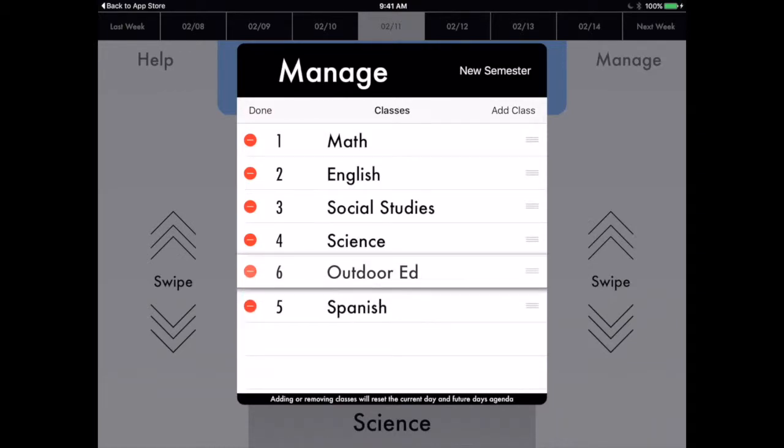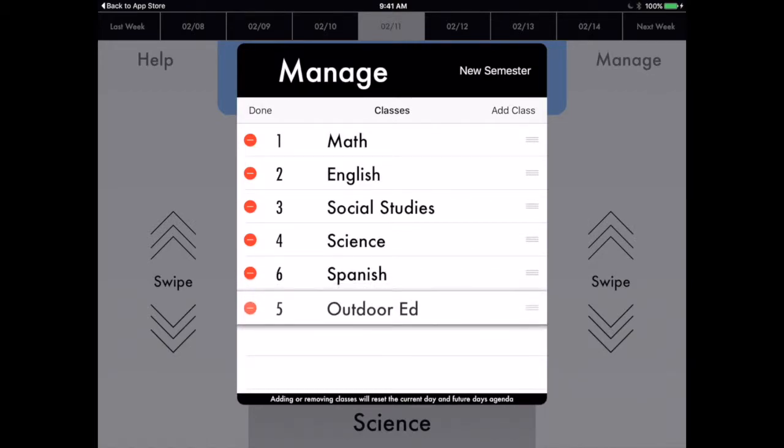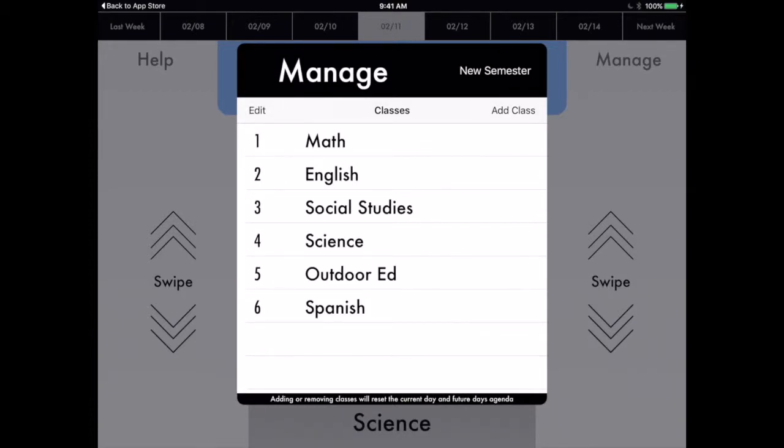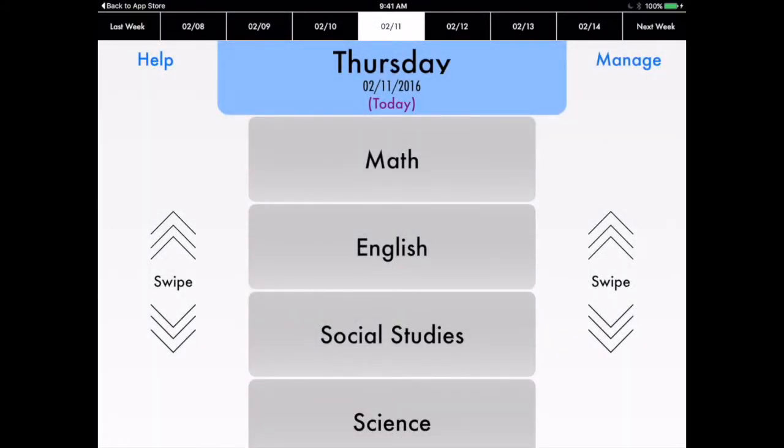Let's say that I'm in Outdoor Ed during 5th period instead of 6th. You can click on the menu, which is like the drag and drop on the right-hand side, and drag it up there and drop it. Click on Done. We're all set, we're good to go. Click outside of Manage, anywhere outside of there, and it takes you back to your homepage.